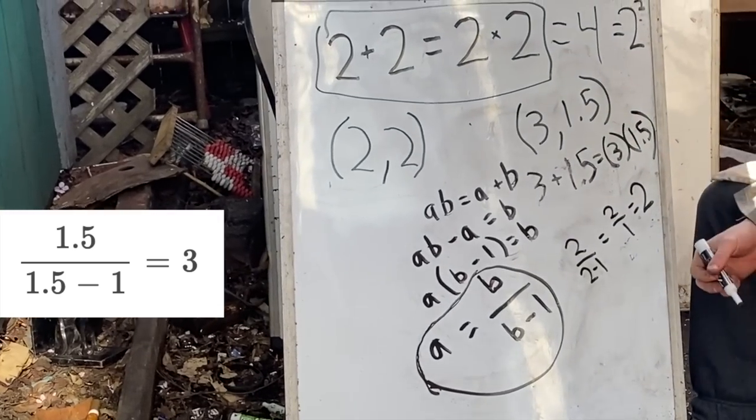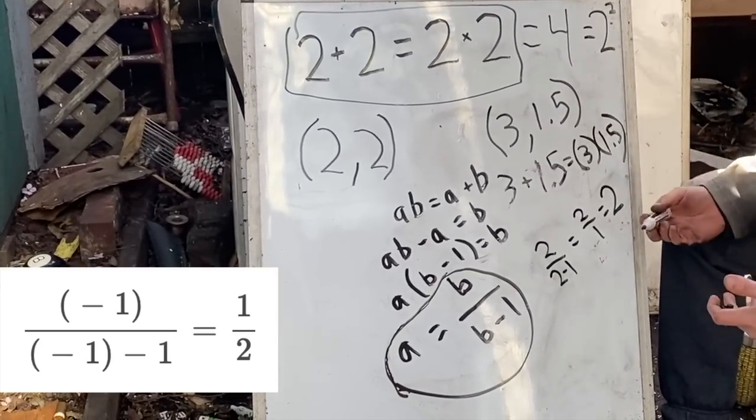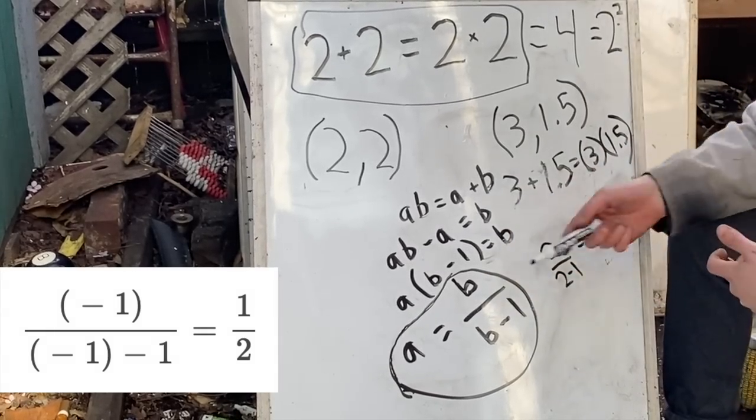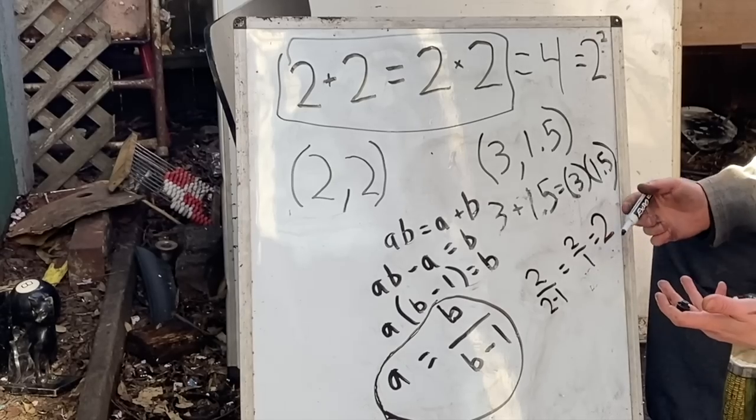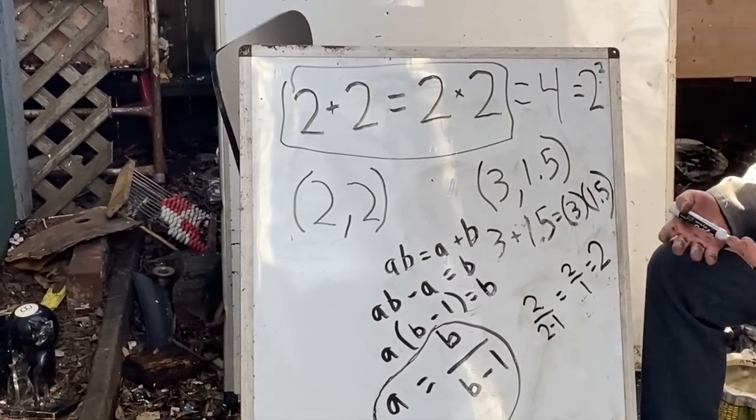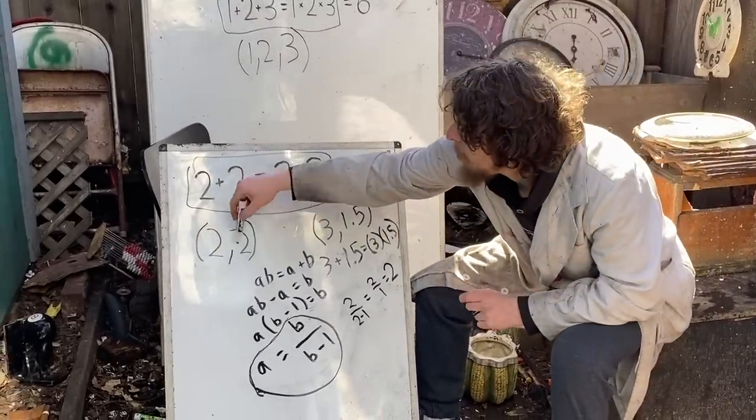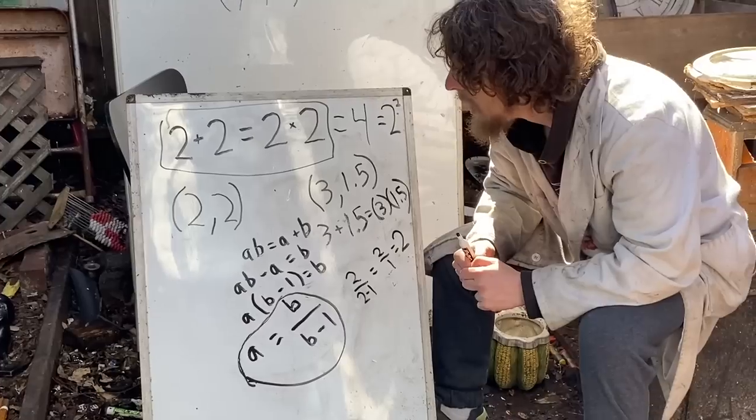I could even try plugging in things like negative 1. And I would find that if I put in negative 1 for b there, a simplifies to be 1 half. And it actually does work that negative 1 plus 1 half is equal to negative 1 times 1 half. So we can pick almost any number for one of these, and there will be some other number that works with it in this way.